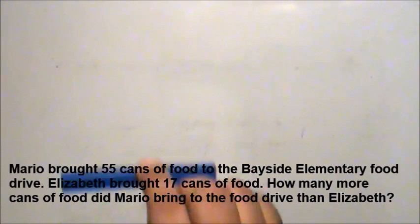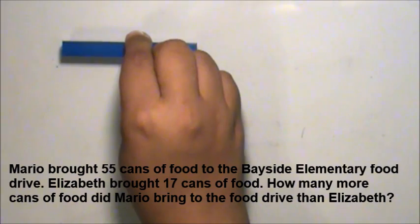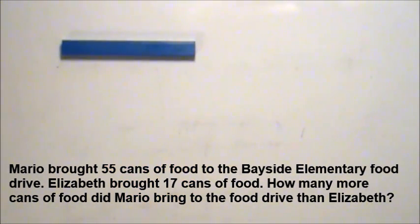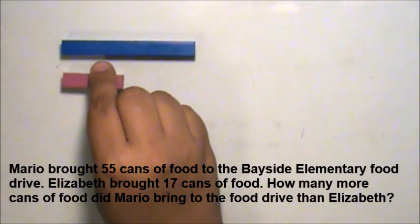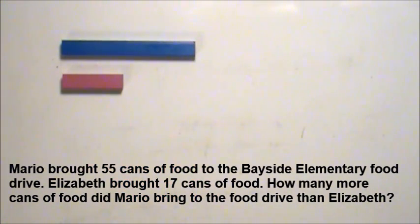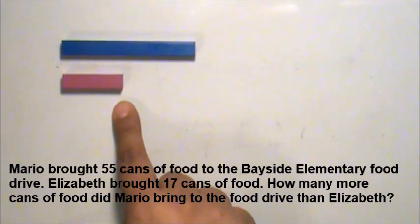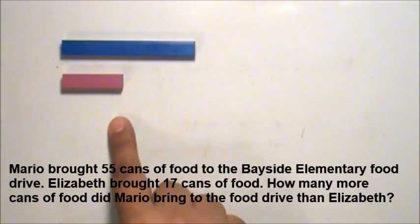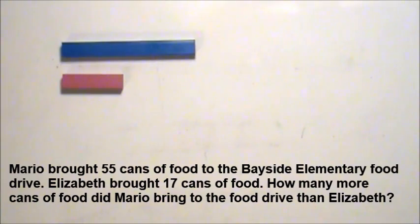Here is Mario with 55 cans of food represented by the blue rod. Here is Elizabeth with 17 cans of food represented by the purple rod. Her rod is smaller than Mario's because 17 is less than 55. My model shows that Mario has more cans than Elizabeth.